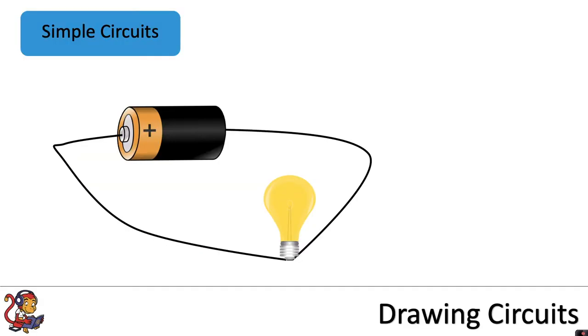In this video you're going to learn how to draw simple circuits. A simple circuit, for example, might include a battery, some wires, and a lamp all connected together.